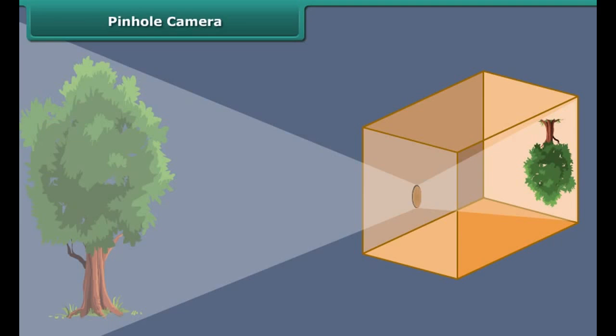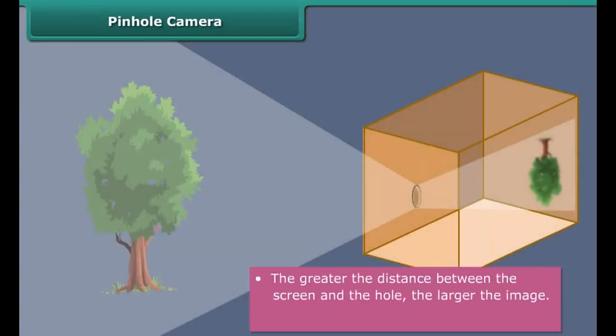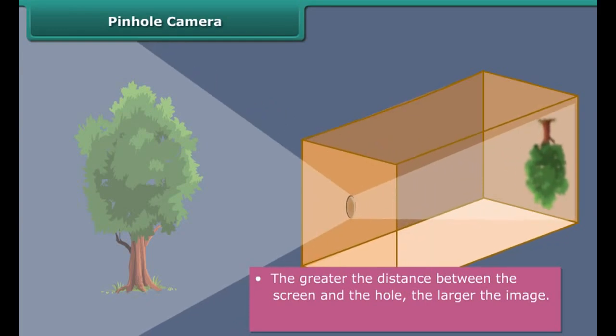A pinhole camera is a light-proof box with a small hole on one side. Light from an object passes through this hole and projects an inverted image of the object on the opposite side of the box.